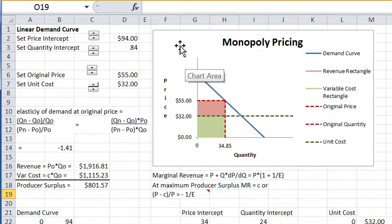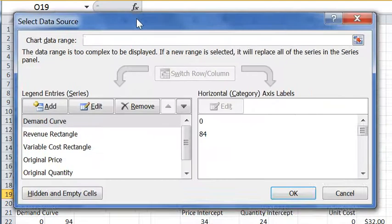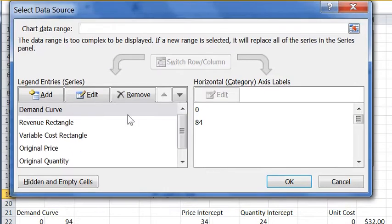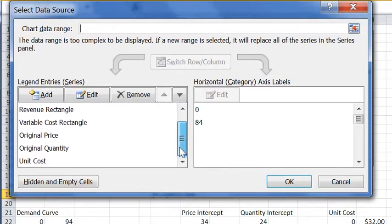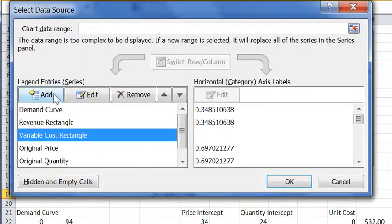Let's begin by right-clicking on the graph. When we do that, we will choose 'Select Data,' and I'm going to move this over so you can see. You can see a variety of series are already here, and if you click on any one of them, let's say the Variable Cost Rectangle, and you want to edit it.